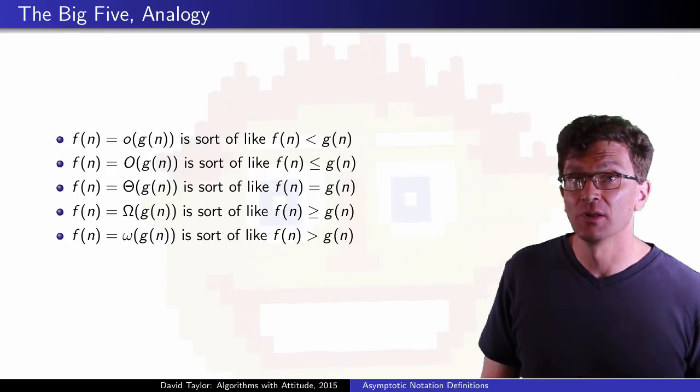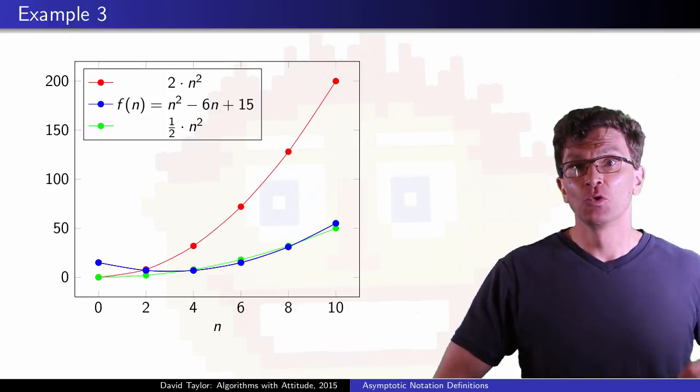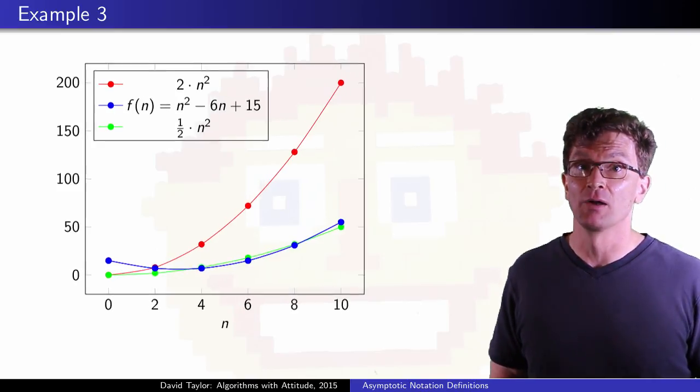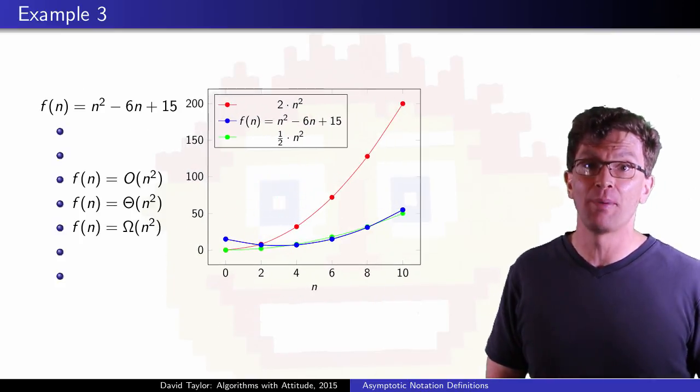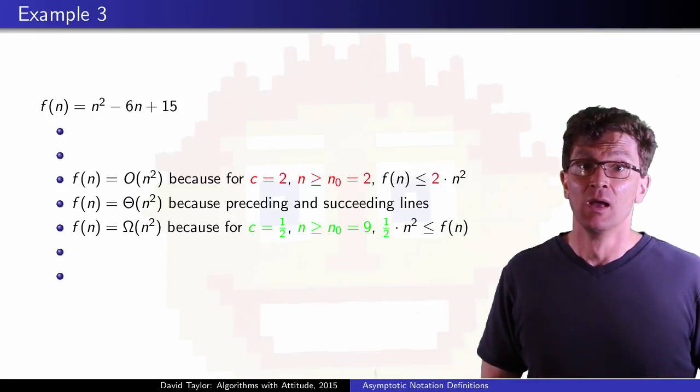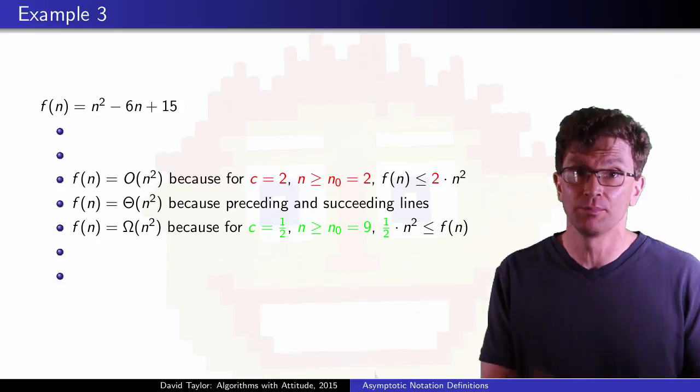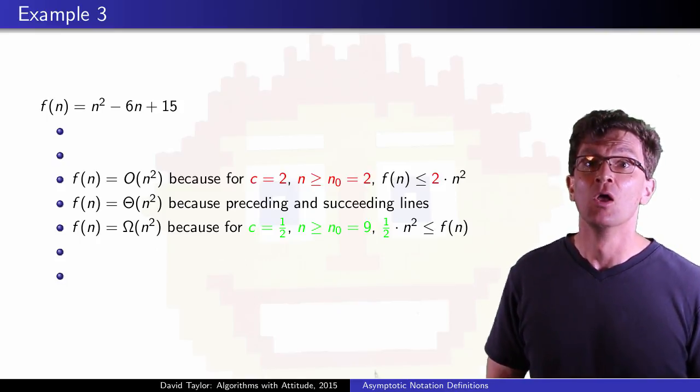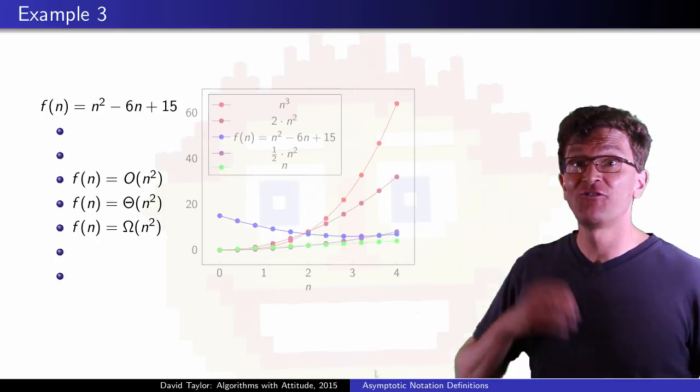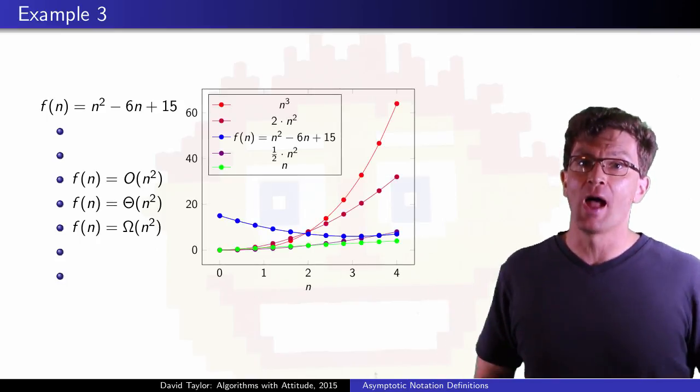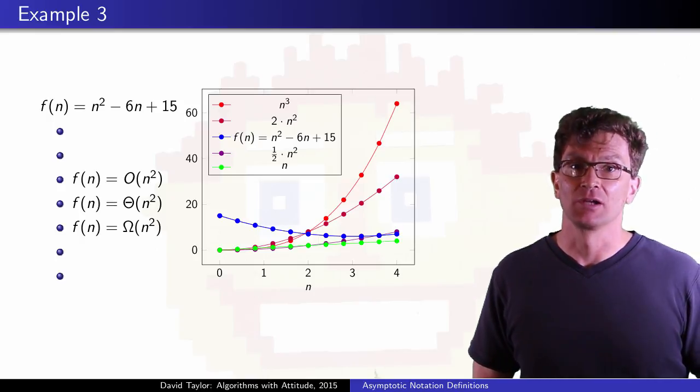For our last example, let's start with the theta bound. If you want to consider a function that grows like n², let's prove our theta bound, proving both upper and lower bounds. I give some c and n₀ values that work here, but assuming that I haven't made any algebraic mistakes, you should be able to work through these equations to see that they hold.